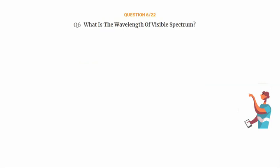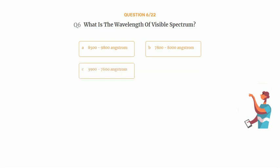Question number 6. What is the wavelength of visible spectrum? Option A: 8,500 to 9,800 angstrom. Option B: 7,800 to 8,000 angstrom. Option C: 3,900 to 7,600 angstrom. Option D: 1,300 to 3,000 angstrom.